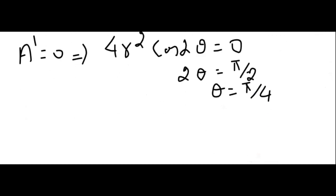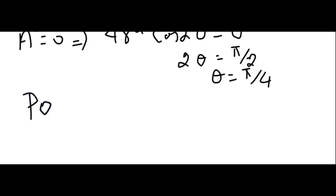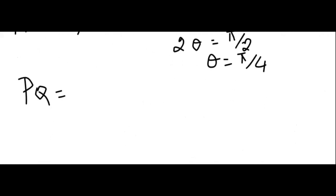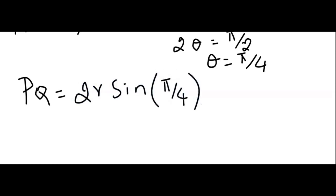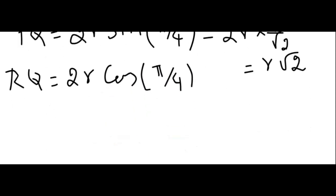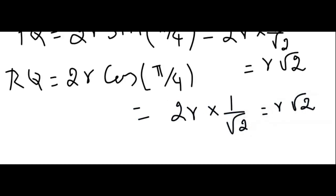The dimensions at θ = π/4: PQ = 2R cos(π/4) = 2R × (1/√2) = R√2. Similarly, RQ = 2R sin(π/4) = 2R × (1/√2) = R√2. Since PQ equals RQ, the rectangle is a square, proving that the square has the maximum area among all rectangles inscribed in a given circle.